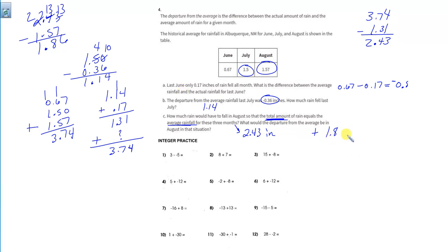And that's the two answers for C, probably the toughest ones there. 2.43 is what we'd have to get, which is 1.86 over the average.